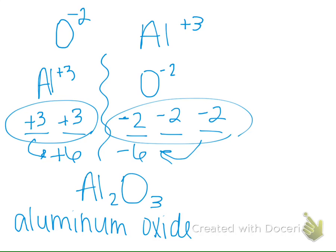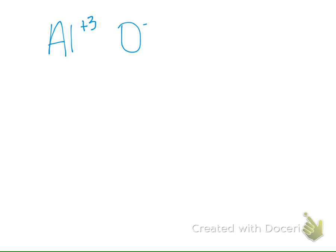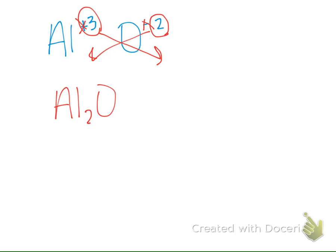Now I'm going to show you how to make it easier. Let's deal with aluminum oxide again. Aluminum is plus three, oxygen is minus two. Here's the shortcut: drop the signs, take the three and move it down as the subscript for oxygen, take the two and move it down as the subscript for aluminum. You get Al2O3 — the correct answer. It works every time.